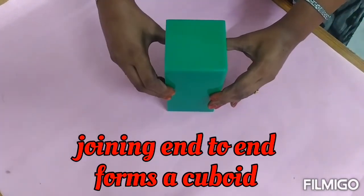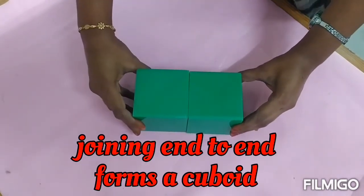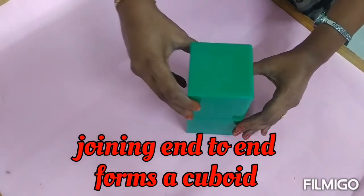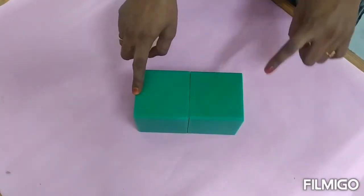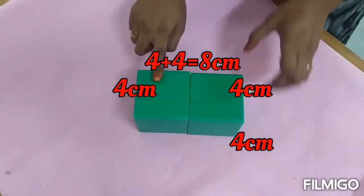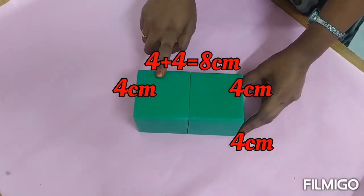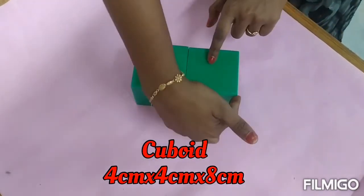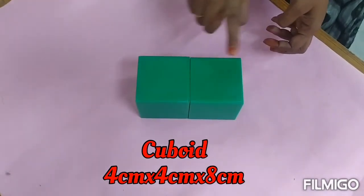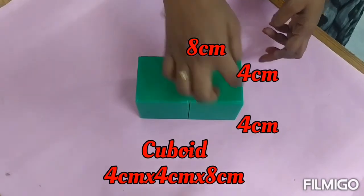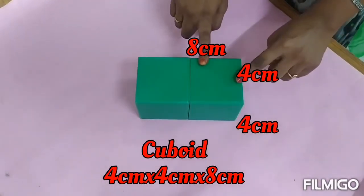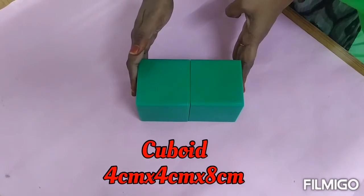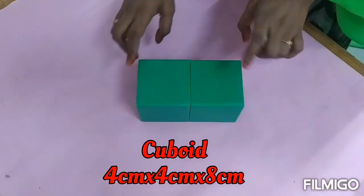Now we are going to join these two cubes end to end, that will form a cuboid. Joining end to end forms a cuboid - either we can keep them one above the other or side by side. Both will result in the same type of cuboid. Here it is 4 cm, 4 cm, 4 plus 4 equals 8 cm. So the dimension of the newly formed cuboid will be 4 × 4 × 8. But usually a mistake or myth you do here is 8, 8, 8 - you will add all the sides, that is wrong. Here see, this is 4, 4, 8. Only one side will be doubled, other sides will be same as it is.